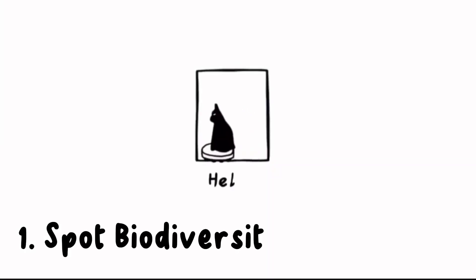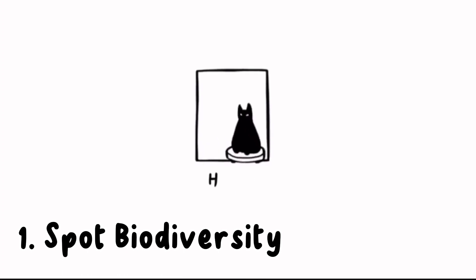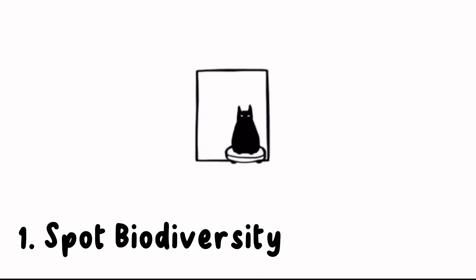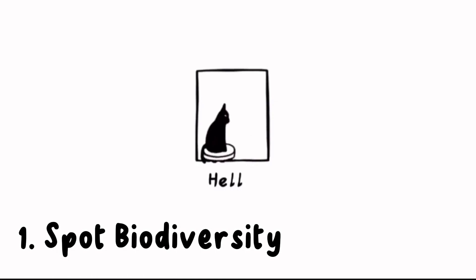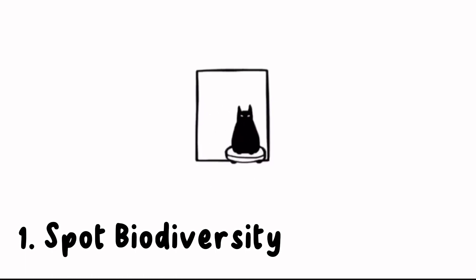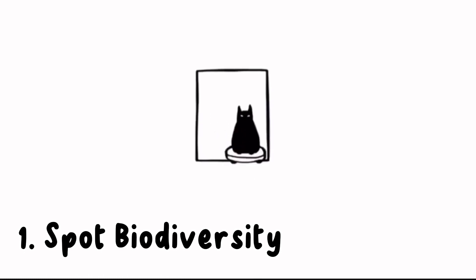Number one spot: diversity. Biodiversity, the variety of life on earth, is a critical component of our planet's health and resilience. It encompasses the multitude of species, ecosystems, and genetic diversity that collectively contribute to the balance and stability of our environment.